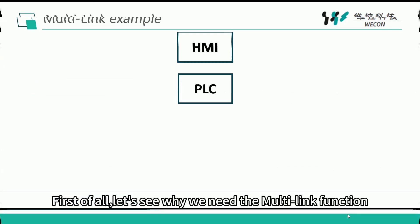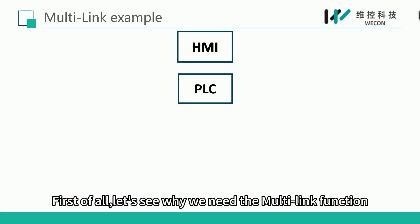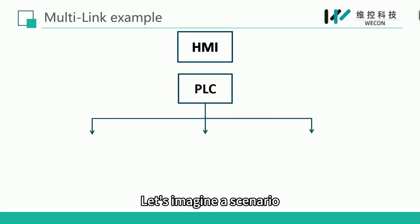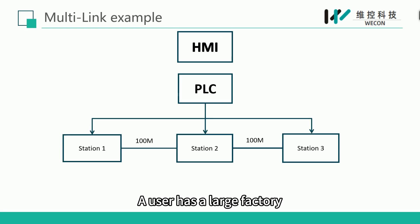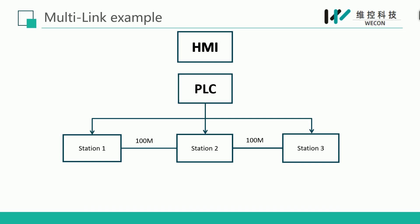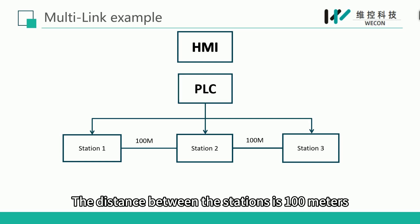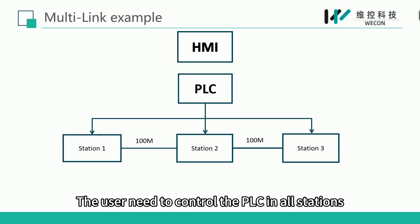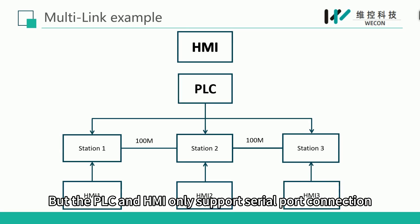First of all, let's see why we need the multi-link function. Let's imagine a scenario: a user has a large factory with a main PLC and three device stations. The distance between the stations is 100 meters. The user needs to control the PLC in all stations, but the PLC and HMI only support serial port connection.